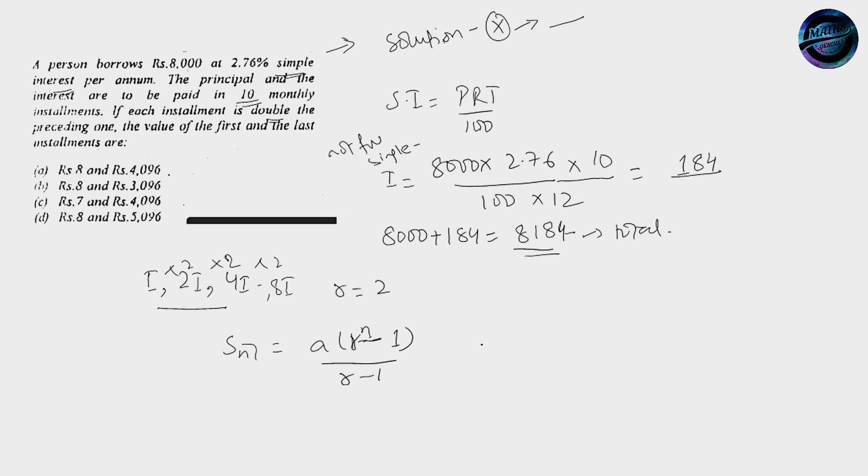Are we using the correct formula? Because if you remember there is another formula for Sn. That is equal to N over 2 into A plus L. A is the first term, L is the last term. So we have to find the value of the first and the last installment. Putting the values over here, this is 10 over 2. The sum is 8184 into A plus L. This becomes 5. So 8184 over 5 is equal to A plus L. This is the first equation.